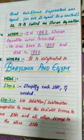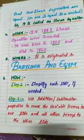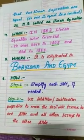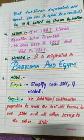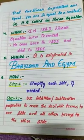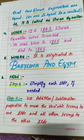The fourth point is: when was the linear equation invented? In 1843, linear equations were invented. Sir William Rowan Hamilton was born in 1805 and died in 1865.